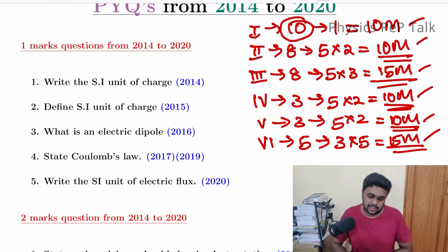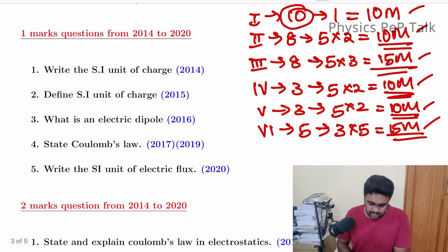One mark questions from 2014 to 2020. In 2014, you have to answer, what is the SI unit of charge? This is in 2014. SI units in every chapter you have to ask. What is an electric dipole? In 2016, what is an electric dipole? State Coulombs law. We will be able to expect one mark. State Coulombs law is 1 mark. State and explain Coulombs law is 2 marks. What is the SI unit of electric flux? This is 1 mark.